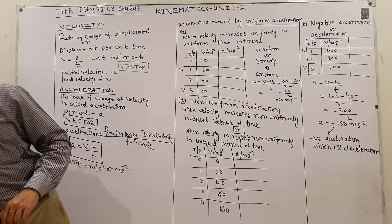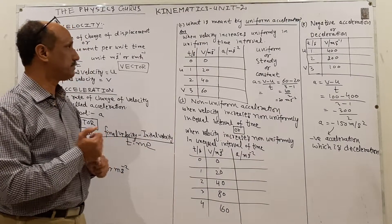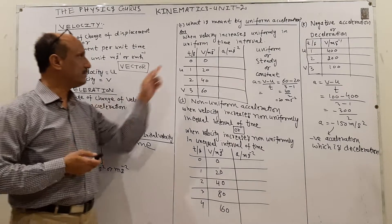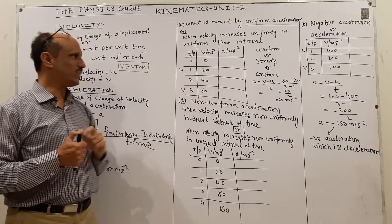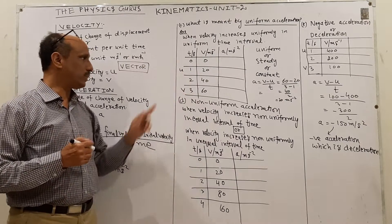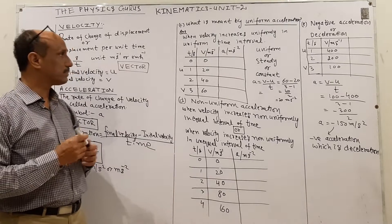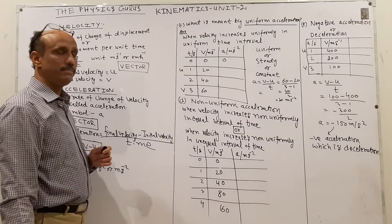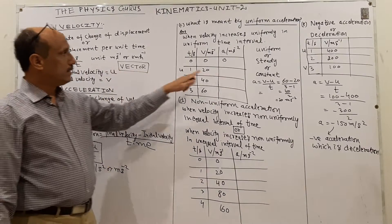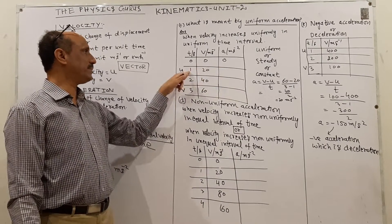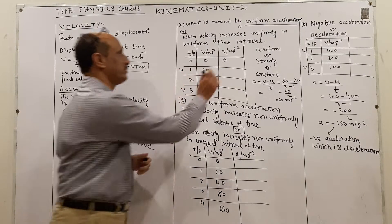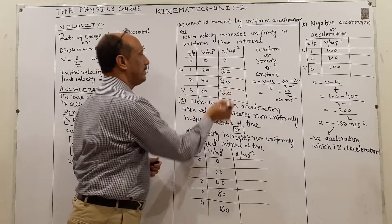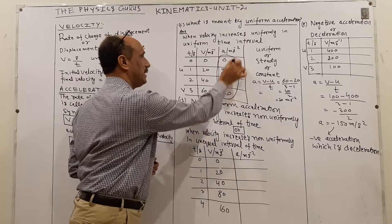What is meant by uniform acceleration? Go through this table: at time 0, velocity is 0; time 1, velocity 20; time 2, velocity 40; time 3, velocity 60. Calculating acceleration as v/t: 20/1 = 20, 40/2 = 20, 60/3 = 20. The acceleration is the same — the acceleration is constant.